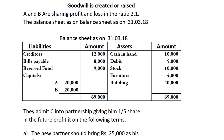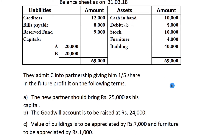A and B are always existing partners and C is always the new partner. Profit sharing ratio is 2:1. Balance sheet as on 31st 2018. Cash in hand 10,000, debtors 5,000, stock 10,000, furniture 4,000, buildings 40,000. The problem also involves goodwill.